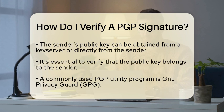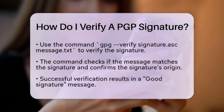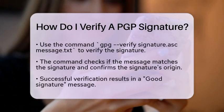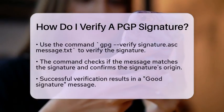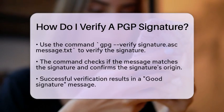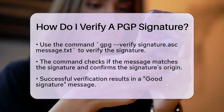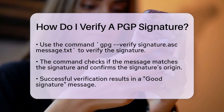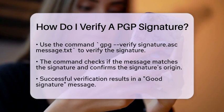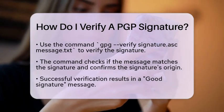To do this, you will use a command in your utility program. For example, you can type: gpg --verify signature.asc message.txt. This command checks if the message matches the signature and confirms that the signature was created using the sender's private key.